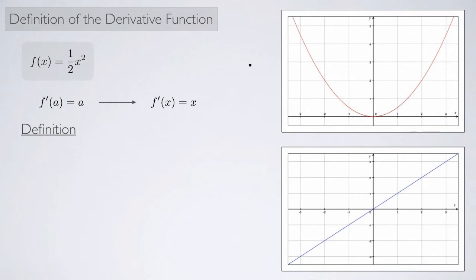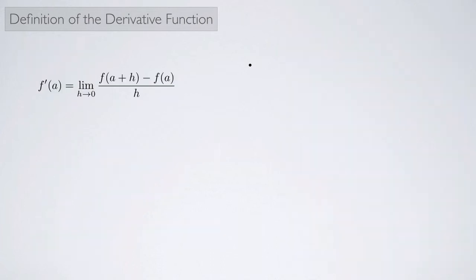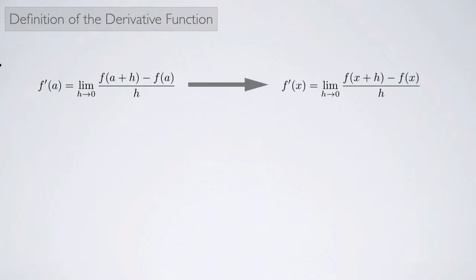This leads us to the following definition. Given a function f, the derivative of f, denoted f prime, is given by f prime of x equaling the limit as h approaches 0 of f of x plus h minus f of x all over h, where the domain of f prime consists of all values of x in the domain of f for which this limit exists. Essentially, we replaced a with x to get the derivative function.